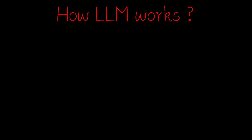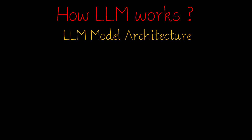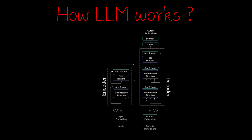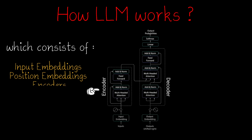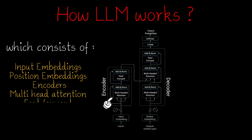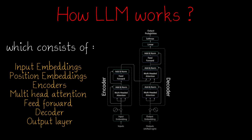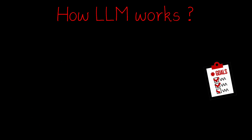For understanding how LLM works, we need to look into the transformer-based LLM model architecture. Here is the architecture, which consists of various sections: input embeddings, positional embeddings, encoders, multi-head attention, feed-forward, decoder, and output layer. Let's understand this one by one.